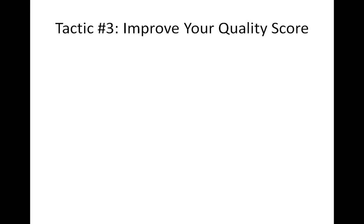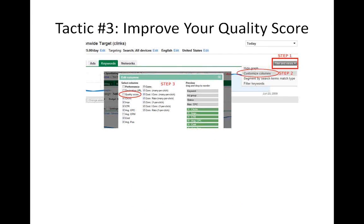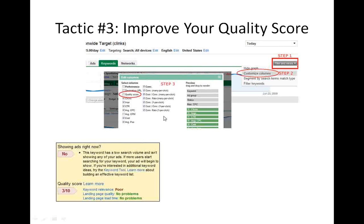Improve your quality score. The quality score is the score Google gives you for your ads and your landing page — basically how relevant your ads and landing pages are for a specific keyword. By default, the quality score is not displayed in Google AdWords, but you can change that easily. Click on Filter and Views, then click on Customize Columns, and check the quality score box. Once you do that, every keyword will have a quality score next to it. For example, the quality score for this specific keyword is only a 3 out of 10.